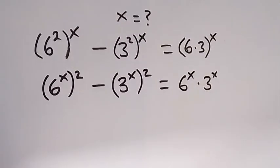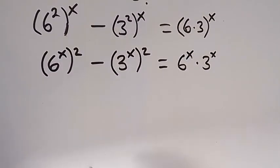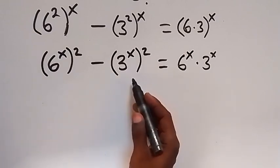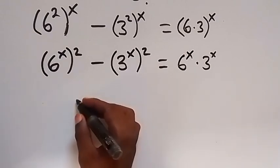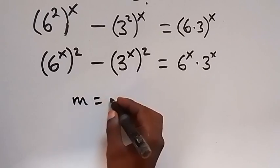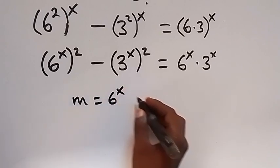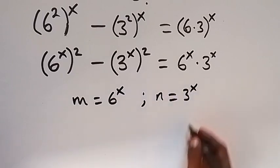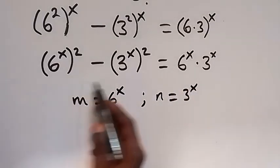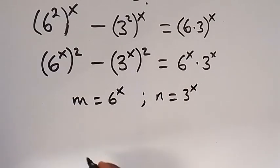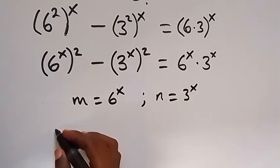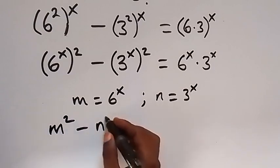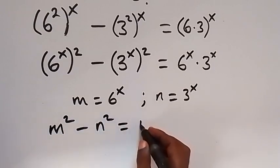From here, let's represent 6 raised to power x with a letter and 3 raised to power x with a letter. So let m equal 6 raised to power x, and let n equal 3 raised to power x. We can write this equation in terms of m and n, and this will be m squared minus n squared equals m times n.